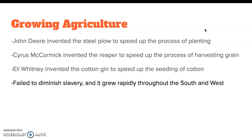Growing agriculture as well — not just the industrial and business centers of the Northeast. Down South, people had to eat and had to grow things to survive. John Deere invented the steel plow to speed up the process of planting. Cyrus McCormick invented the mechanical reaper to speed up the process of harvesting grain. Eli Whitney invented the cotton gin to speed up the seeding of cotton.